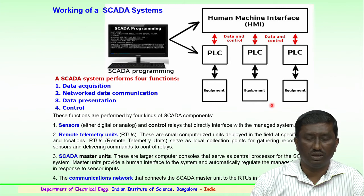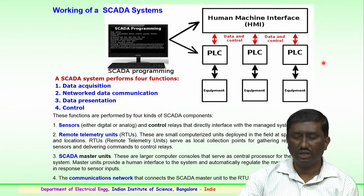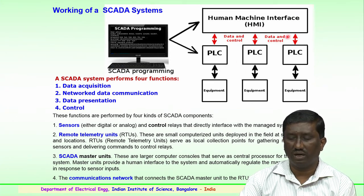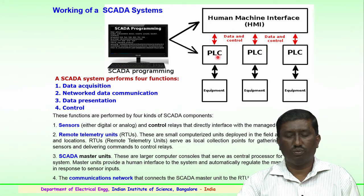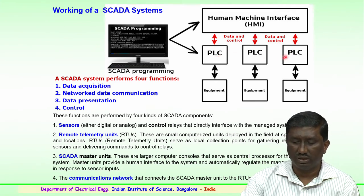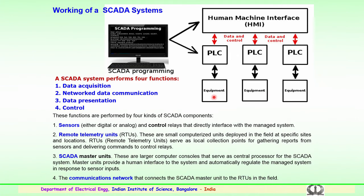How does a SCADA system work? Typically it is basically a human-machine interface. It has data and control arrangements through programmable logic controllers. This data and control information is obtained from various equipment in the field. The sensors placed near the equipment communicate data to the PLC. Further, through SCADA — the supervisory control and data acquisition — you can see and monitor, perform analysis, and take the right decision. The SCADA system performs mainly four important functions: data acquisition from equipment, network data communication, data presentation, and control.